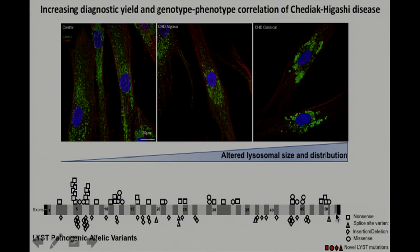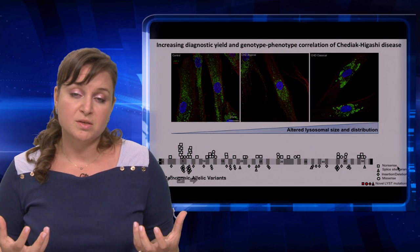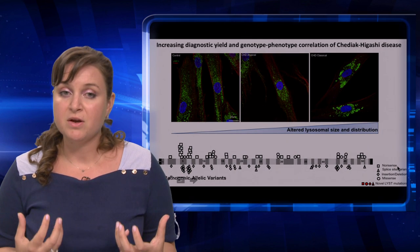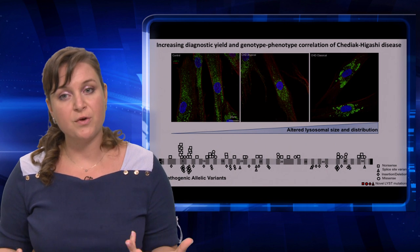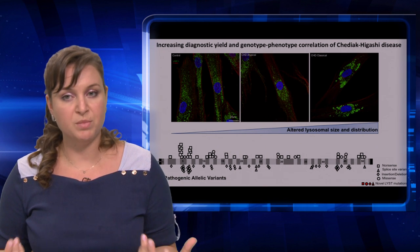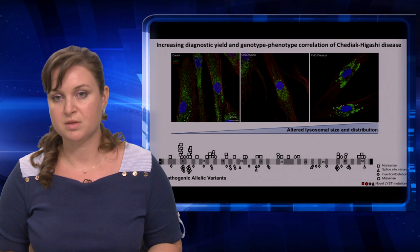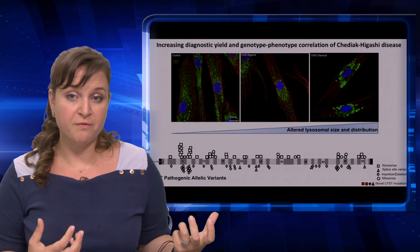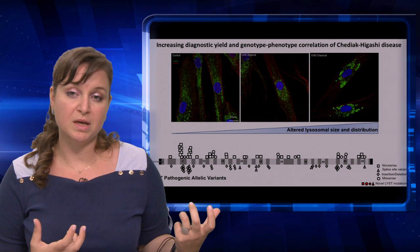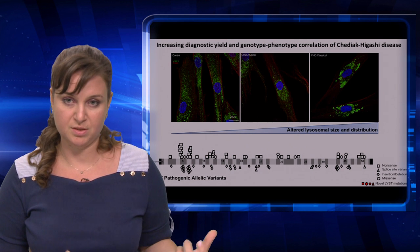More than 80 mutations have been reported so far, scattered throughout the LYST gene. Severe nonsense mutations, where variants result in a non-functional protein product, including frameshifts, splice sites, and insertion or deletion mutations, are mostly found in classical CHD patients.